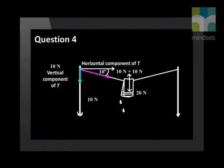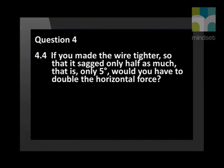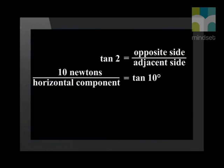Remember that each pole holds up half the weight of the towel. Now that you know how to calculate the horizontal component, let's use the same method to think about this: if you made the wire tighter so that it sagged only half as much — that is, only 5 degrees — would you have to double the horizontal force? You can use the same method of calculation as before. The answer could surprise you, but the maths gives us the explanation.